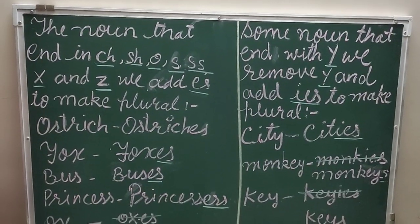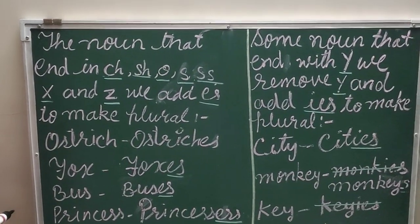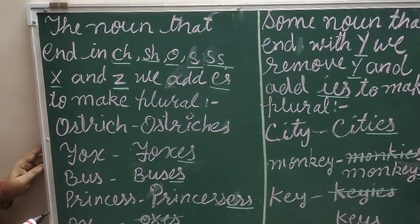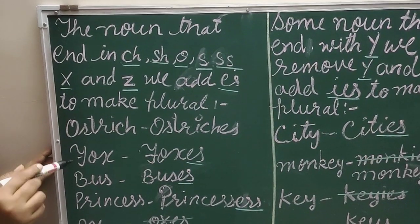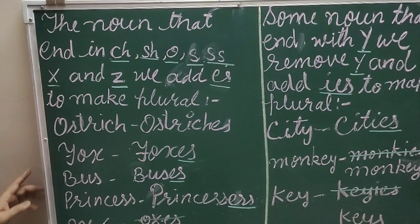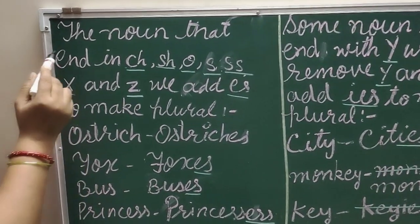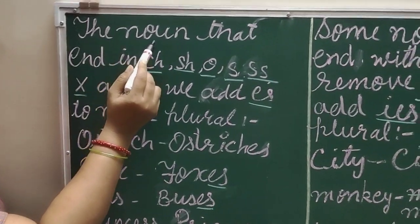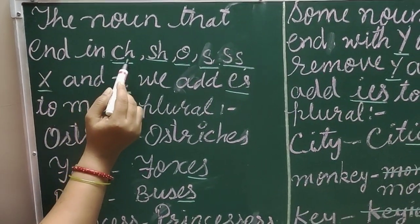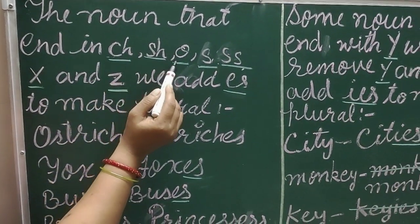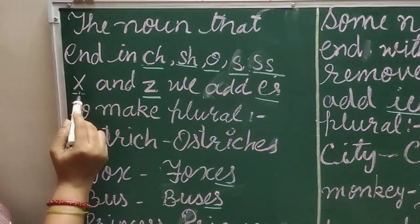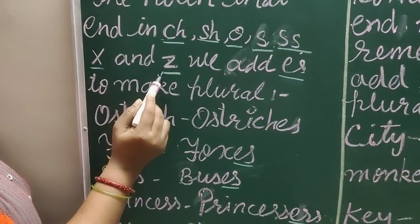Now children, there are some particular rules to make a plural. The nouns that end in CH, SH, OS, double-S, X, and Z — we add ES to make them plural.